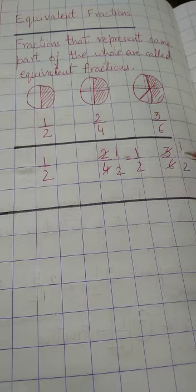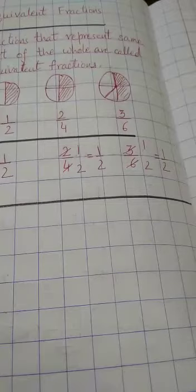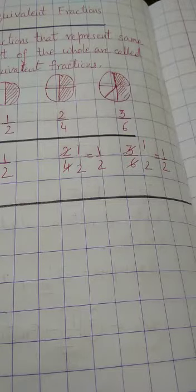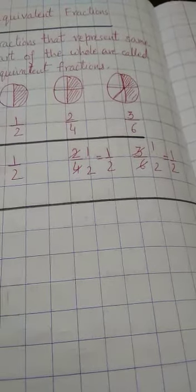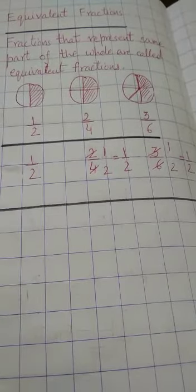And 3 upon 6 - 3 times 1 is 3, 3 times 2 is 6. So it will also equal 1 upon 2. These values are the same, so that's why they are called equivalent fractions.